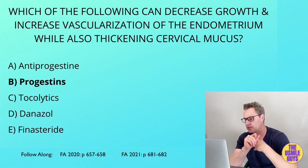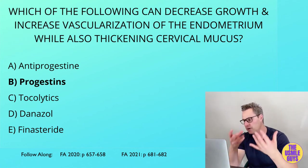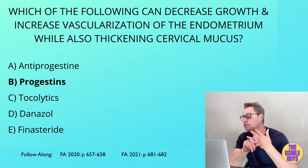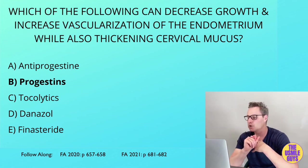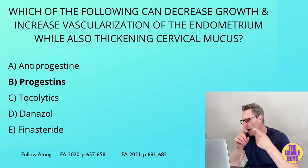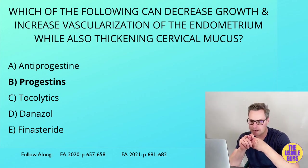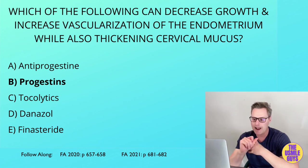Finasteride is a 5-alpha reductase inhibitor — it prevents the conversion of testosterone into DHT. We can use it in BPH and also to stop male pattern baldness. Another male pattern baldness drug to keep in mind is minoxidil, which works via direct arteriolar vasodilatory action. While we're on finasteride, which is an anti-androgen, let's look at the others in this class.